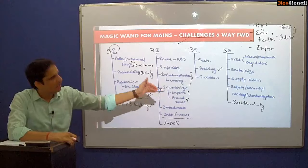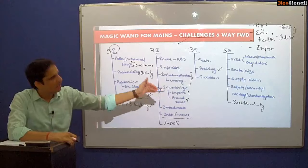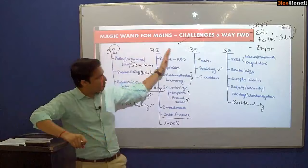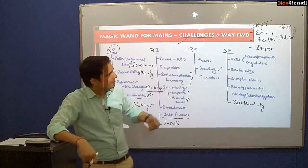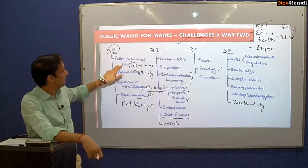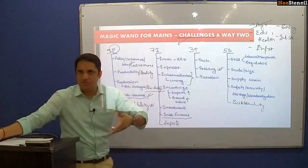Now we have covered agriculture. The next topic is education — how to use the same challenges framework. In education, out of 20 dimensions you put most into challenges and some into way forward and draw a diagram. In case of the education policy, schemes, law, and governance mechanism: education is a concurrent subject shared by the Centre and states, which causes governance problems.